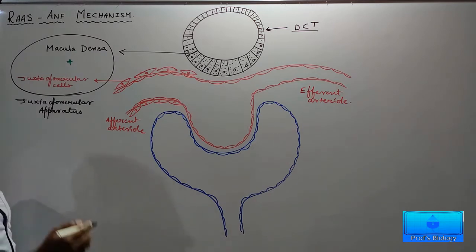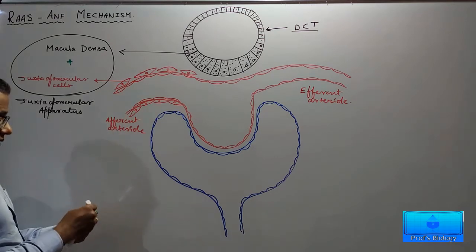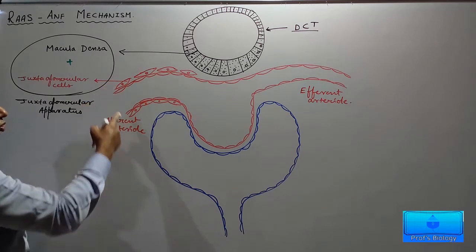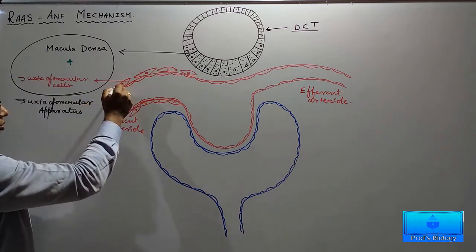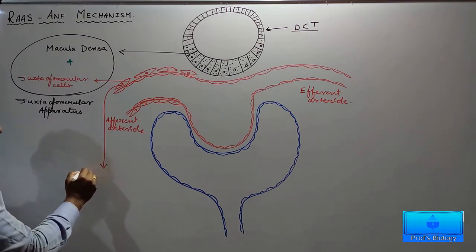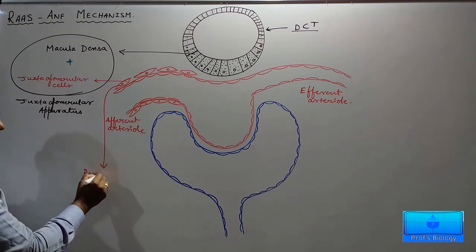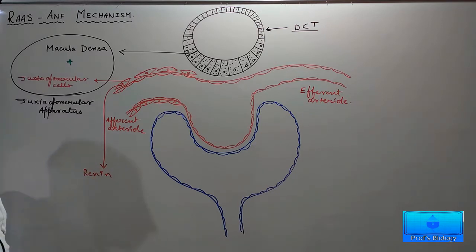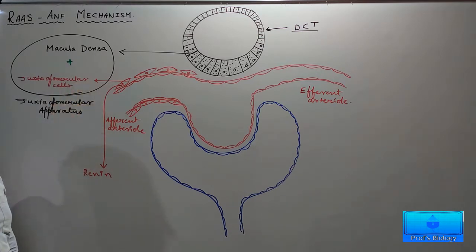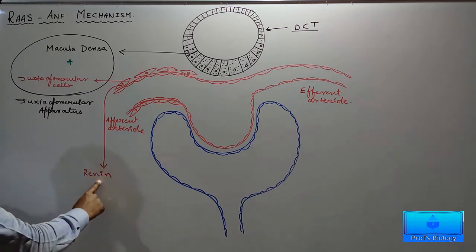Whenever the kidneys don't get enough blood, these juxtaglomerular cells — which are the swollen smooth muscle cells of the afferent arteriole — release a hormone called renin. Juxtaglomerular cells are the primary cells which produce and store renin.